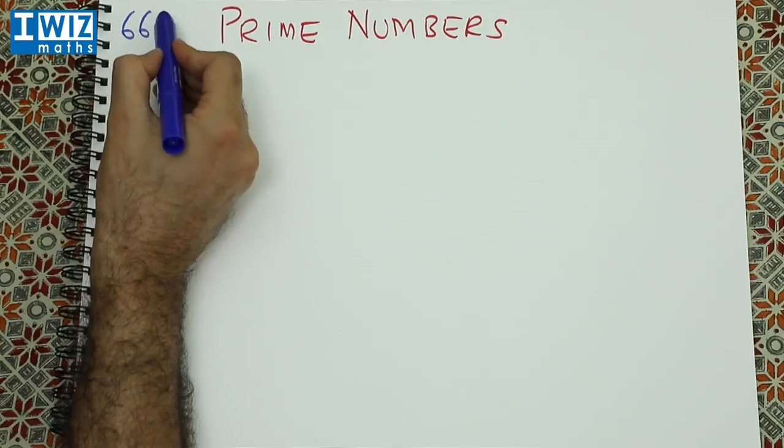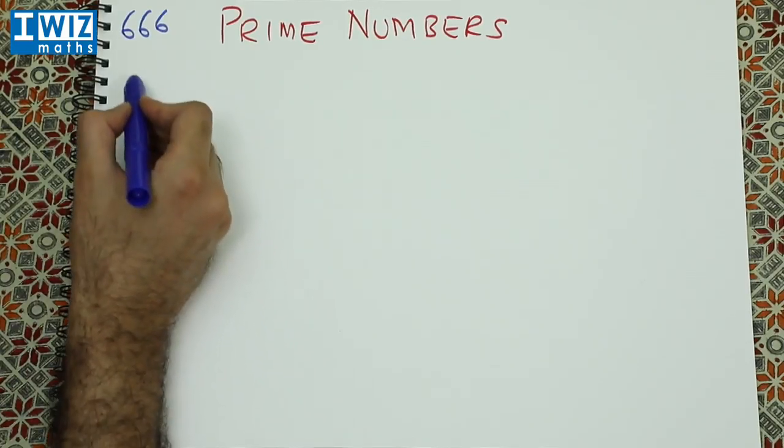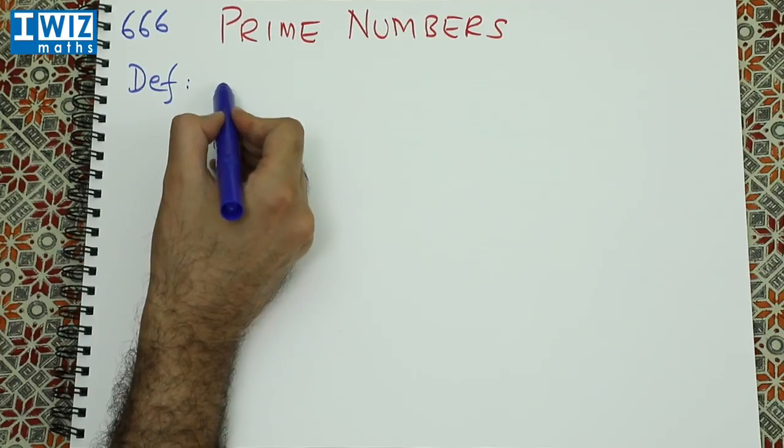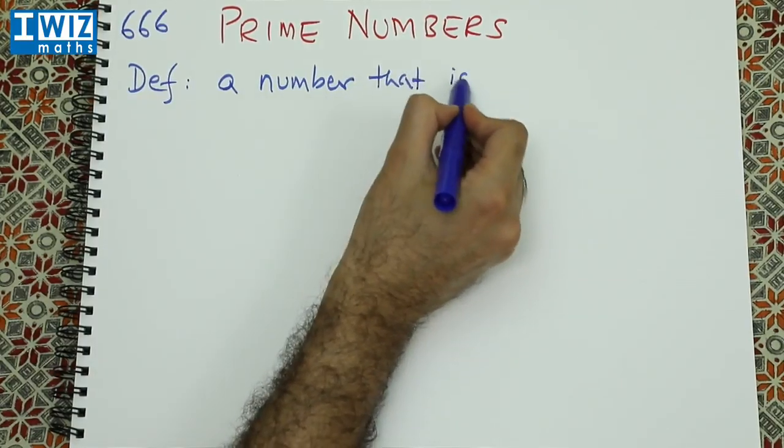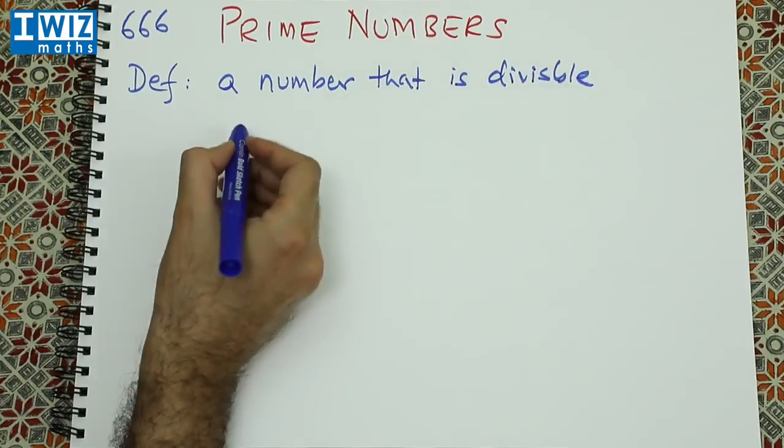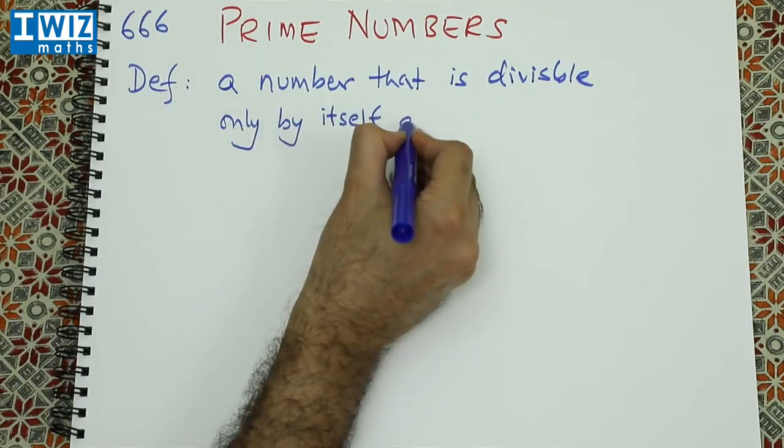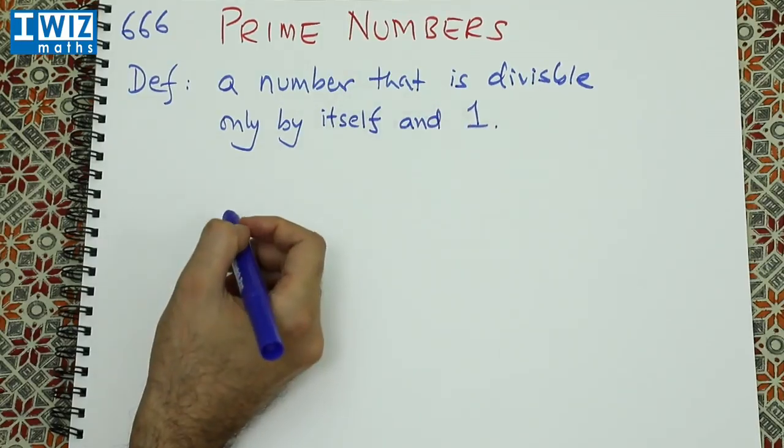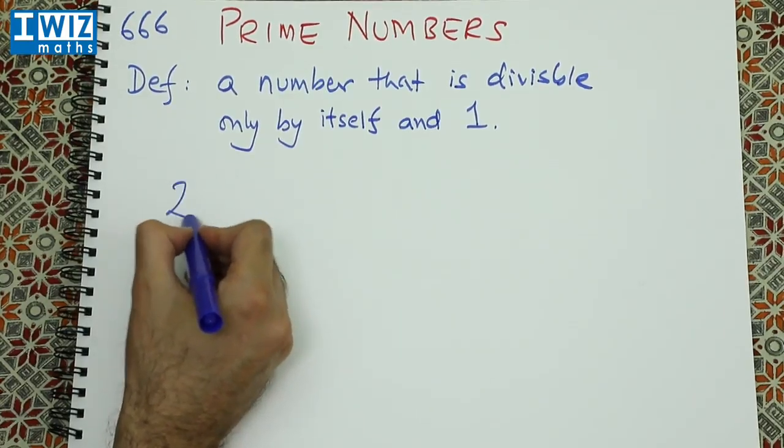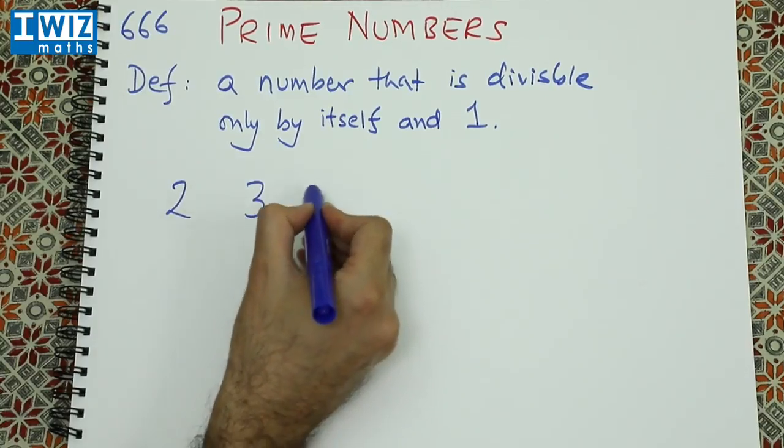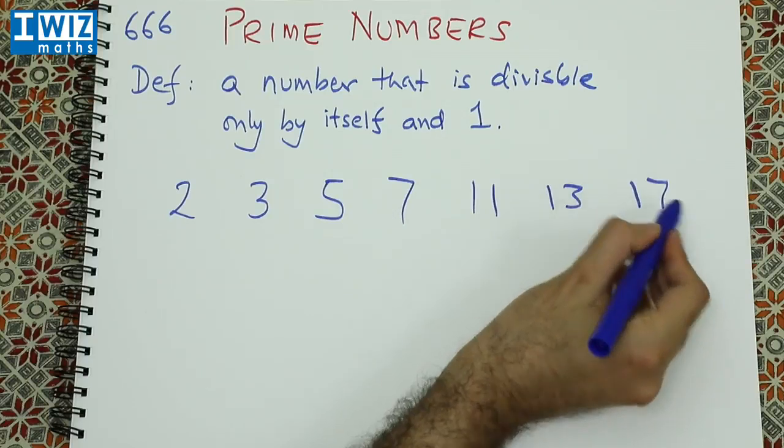The number 666 is an even number. So what's that got to do with prime numbers? Let's recall the definition of a prime number: a prime number is a number that is divisible only by itself and 1. So let's recall the first couple of prime numbers: 2, 3, 5, 7, 11, 13, and 17.